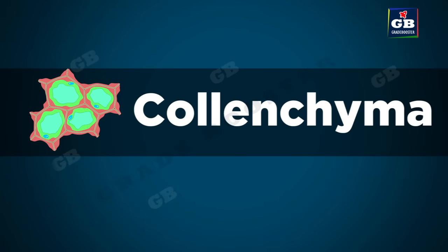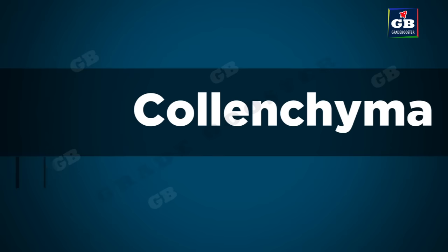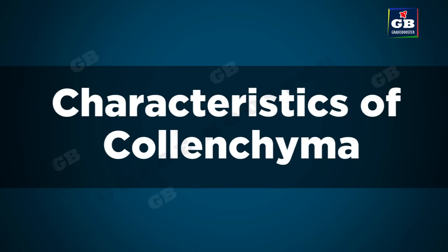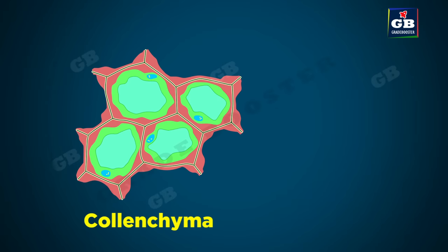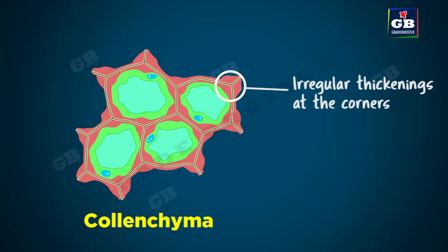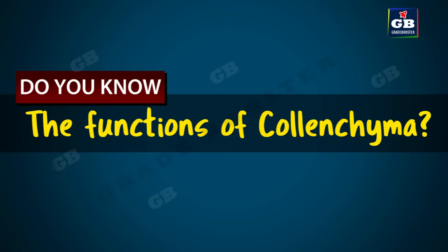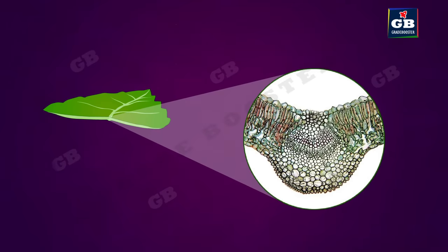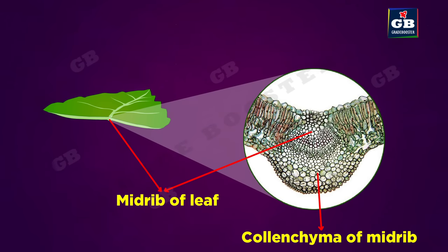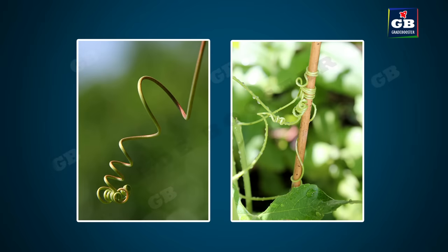Next we see another type of simple permanent tissue called collenchyma. The cells of collenchyma are living cells. They are elongated cells with irregular thickenings at the corners. The intracellular space between the cells of collenchyma is very less. Collenchyma gives flexibility to plant parts like tendrils and stems of climbers without breaking, and it also provides mechanical support.